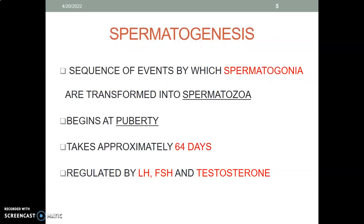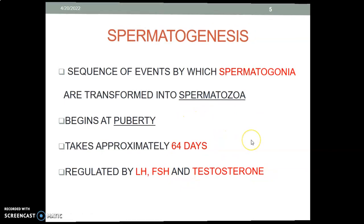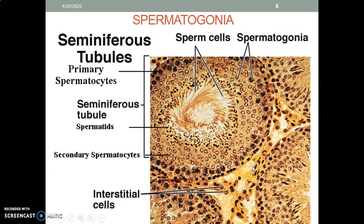Spermatogenesis is a sequence of events in which spermatogonia are transformed into spermatozoa. This begins at puberty and takes approximately 64 days. The hormones that regulate spermatogenesis are luteinizing hormone (LH), follicle-stimulating hormone (FSH) — both from the pituitary gland — and testosterone.